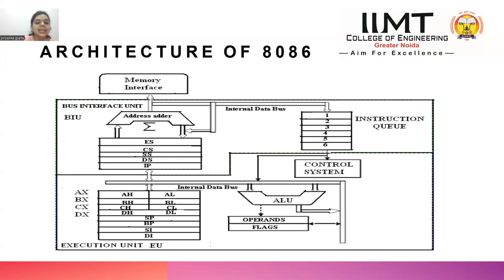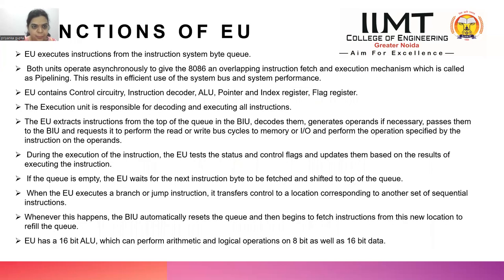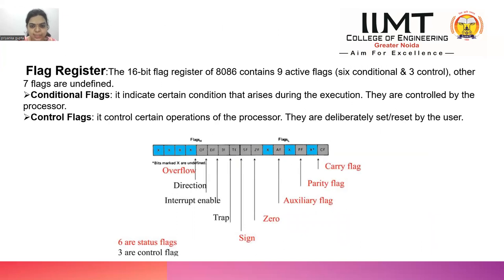The EU also has pointer and index registers: SP (stack pointer), BP (base pointer), SI (source index), and DI (destination index). The stack pointer contains the address of the top of the stack. SP, BP, SI, and DI are used as offset registers for their corresponding segments. The operand latch is used internally by the microprocessor for temporary storage and cannot be accessed by the programmer.